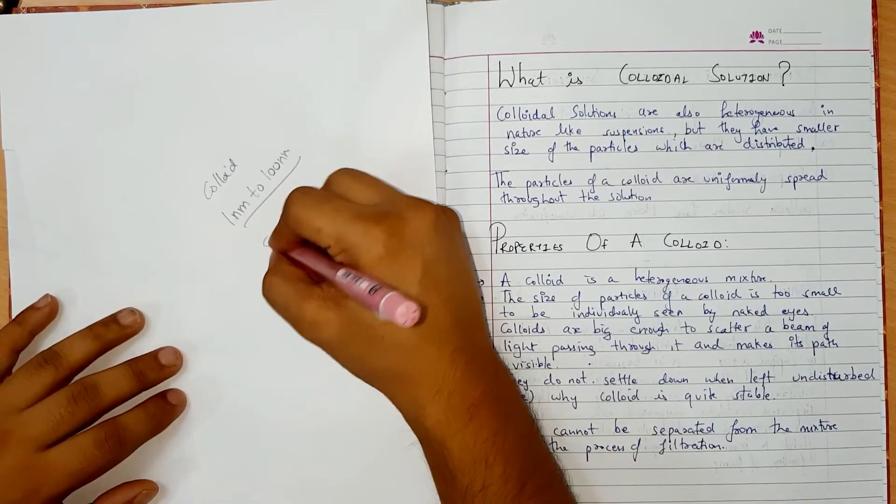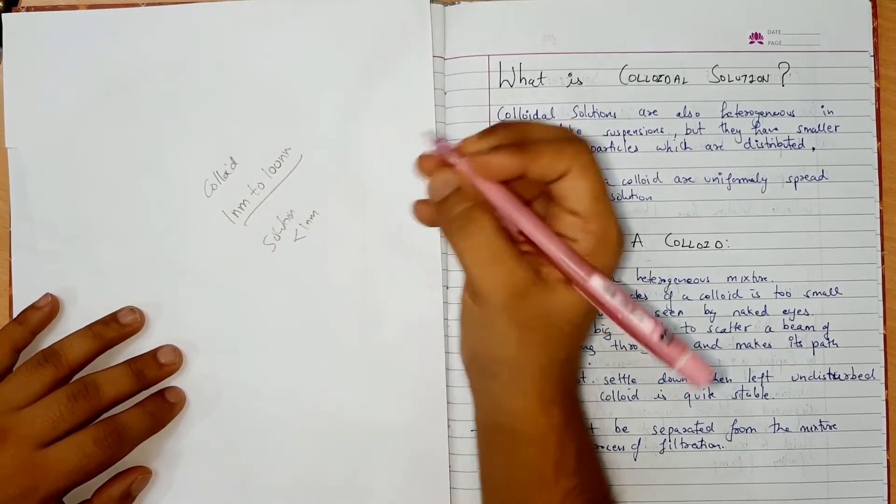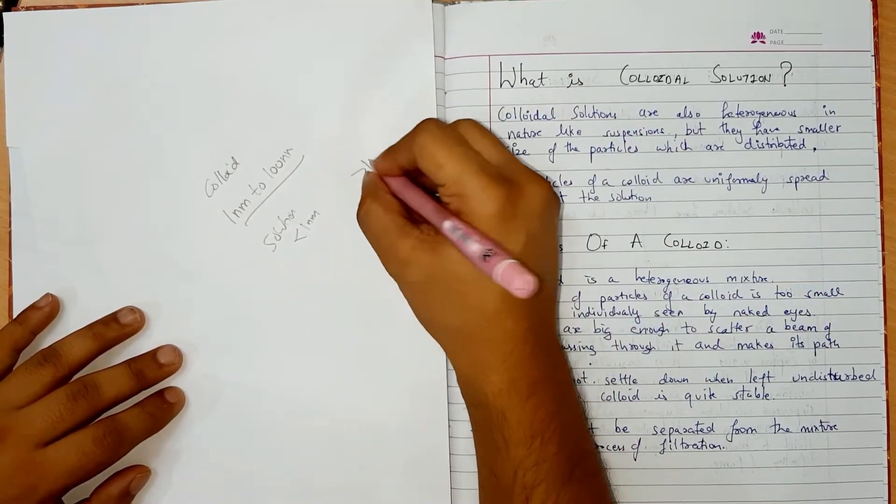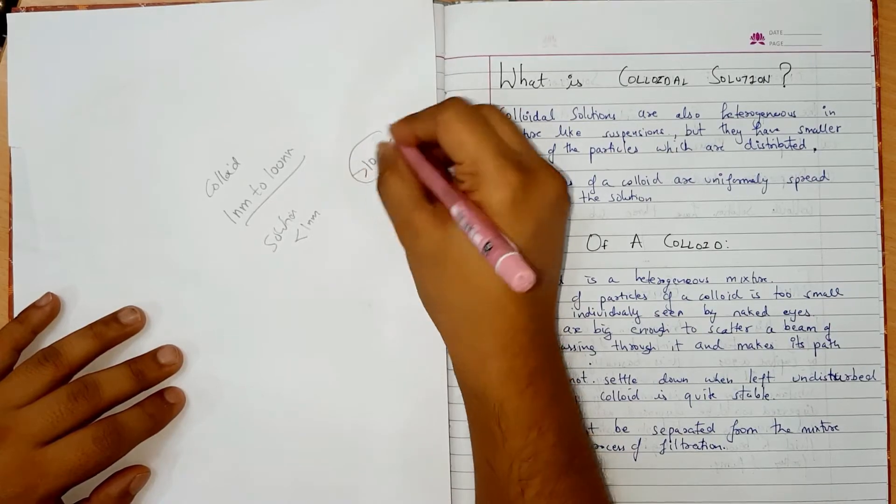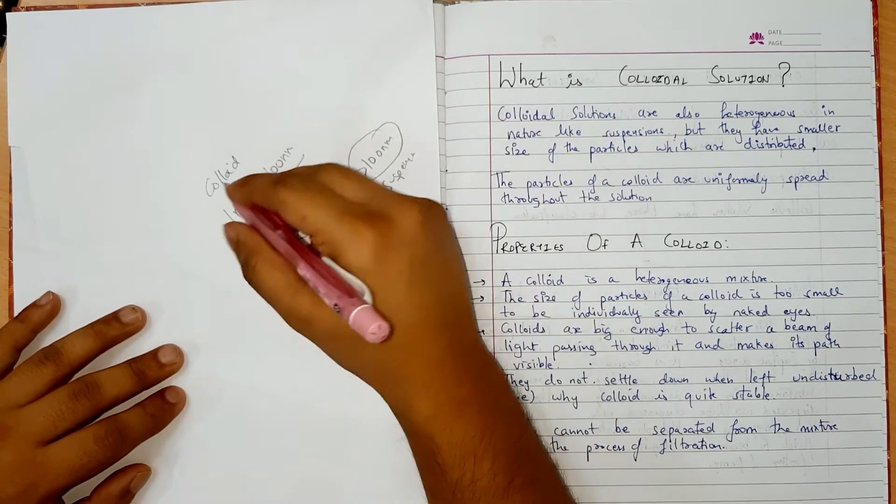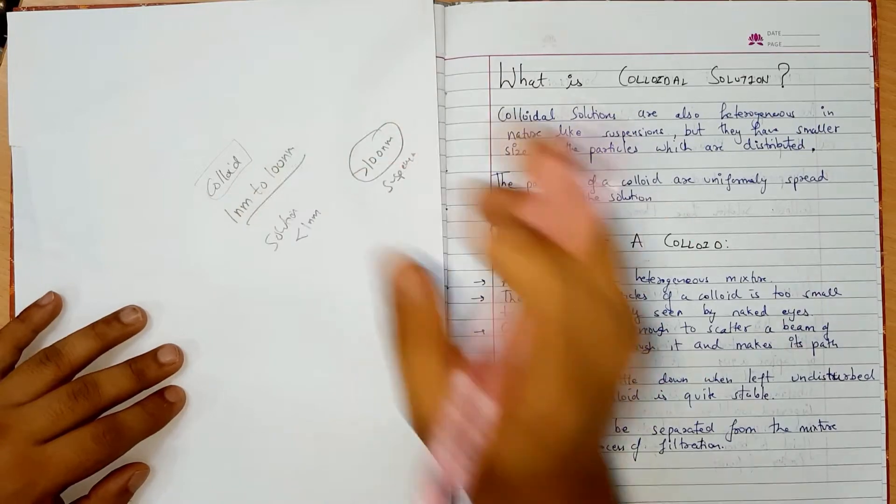And the solution which we have said true solution, they are less than 1 nanometer. And the suspension, they are more than 100 nanometer. So we can see these particles with the naked eye but we can see the colloid.